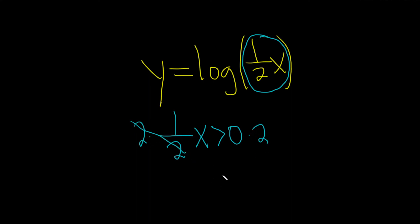So these cancel, so we get x is bigger than, and then zero times two is zero, so x is positive.